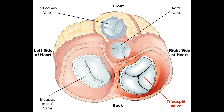The third type of wall is the tricuspid wall. It is located between the right atrium and right ventricle. During ventricular contraction, this tricuspid wall prevents the blood from moving from the right ventricle into the right atrium.